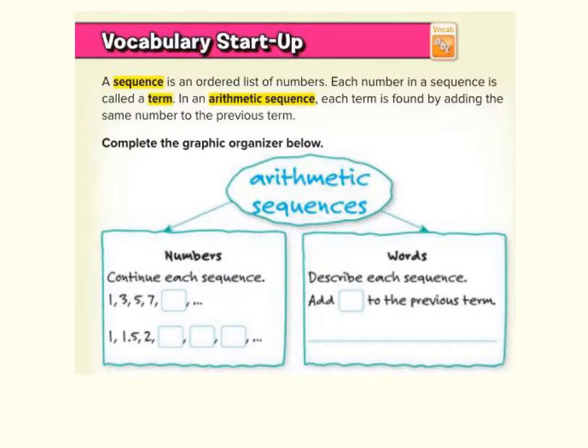Number sequences, all you have to do is continue each sequence. So if we go 1, 3, 5, 7, the next number is going to be the number 9. So let's write the number 9 in there. If we've got 1, 1.5, 2, the next number is going to be 2.5, then 3, then 3.5.